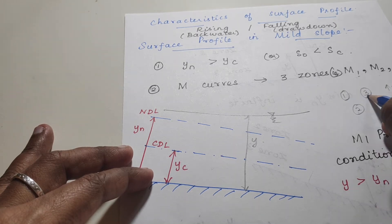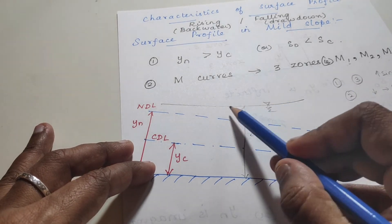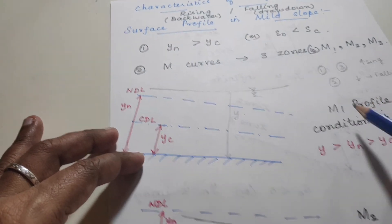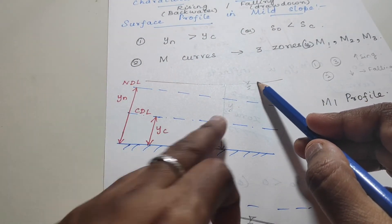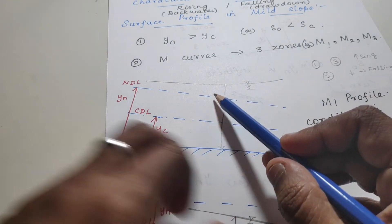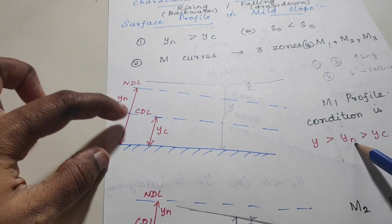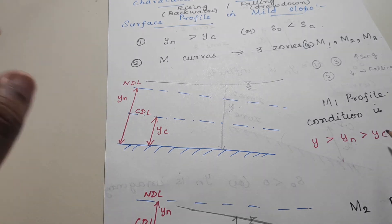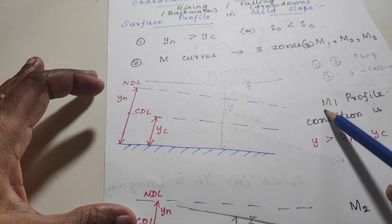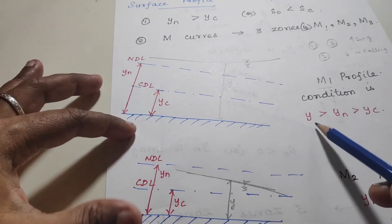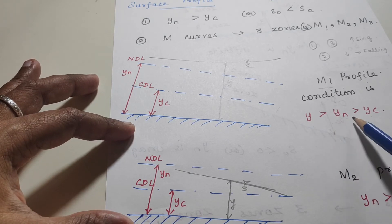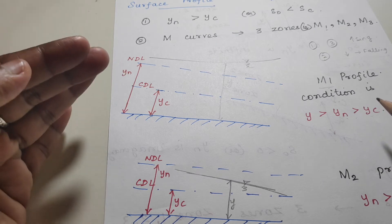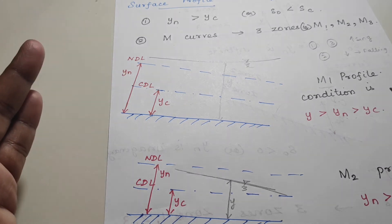In zone 1, since the profile is rising, the actual depth y is greater than the normal depth line yn, and also greater than the critical depth yc. So the M1 profile condition is: y > yn > yc.